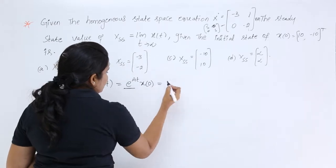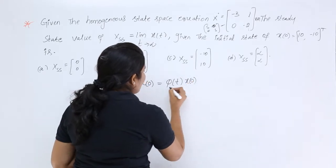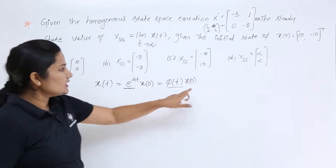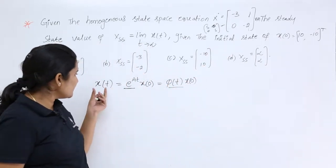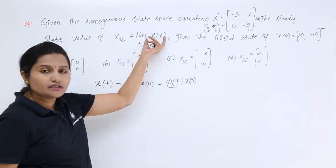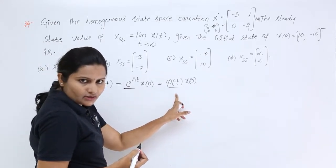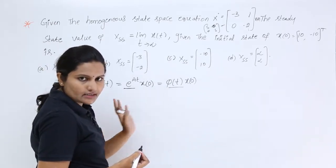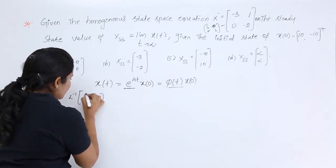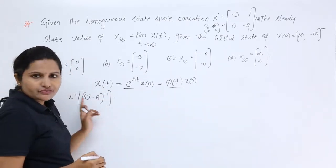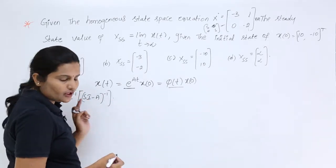Here, e^(At) is equivalent to the state transition matrix φ(t). So how can we find out φ(t)? Given x(0), if we know φ(t), we can substitute it to get x(t), and by substituting x(t) into the limit we get x_ss. The formula for the state transition matrix is the inverse Laplace transform of (sI - A) inverse.